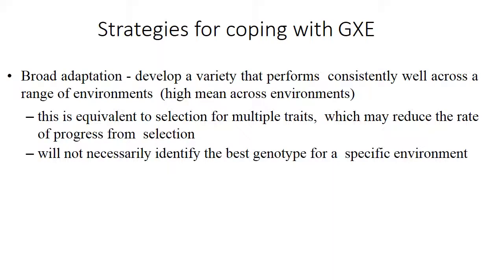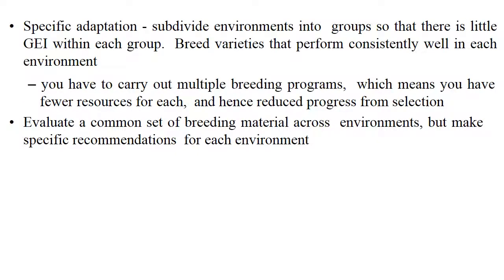The strategies for coping with G×E interaction: The first is broad adaptation — develop a variety that performs consistently well across a range of environments, i.e., high mean across environments. This is equivalent to selection for multiple traits, which may reduce the rate of progress from selection and will not necessarily identify the best genotype for a specific environment. If specific adaptation is the goal, subdivide the environment into groups so that there is little G×E interaction within each group, and breed varieties that perform consistently well in each environment. For that we carry out multiple breeding programs, which means fewer resources for each and hence reduced progress from selection. Evaluate a common set of breeding material across environments but make specific recommendations for each environment.